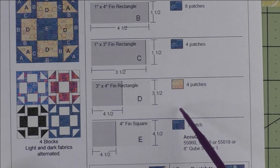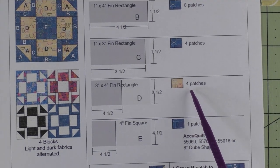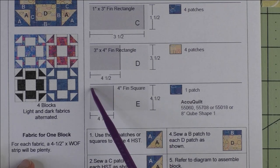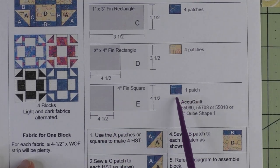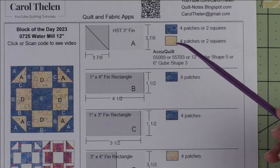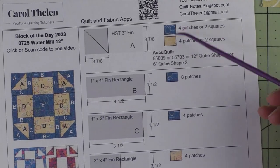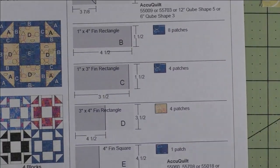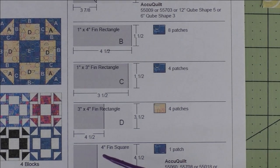Patch E is a four inch finished square. We cut four and a half inch squares, we just need one patch of the dark fabric. Now if you're going to reverse the fabrics for your alternate blocks, then whatever is dark here, you cut that light. I also wanted to show you something that I have been discovering lately. I don't know why it took me so long to figure it out. I usually do the blocks of the day using either scraps or fat quarters.